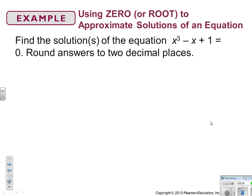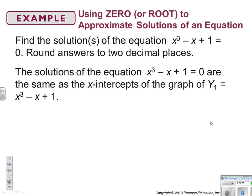Find the solutions of the equation x cubed minus x plus 1 equals 0. Round answers to two decimal places. The solutions to this equation are the same as the x-intercepts of the graph of y equals x cubed minus x plus 1. And I will give you guys a moment. Go ahead and put y equals x cubed minus x plus 1 in your graphing utility.